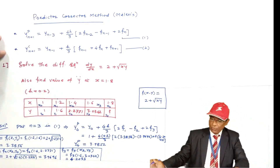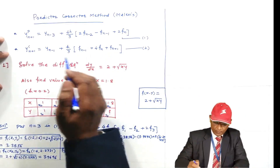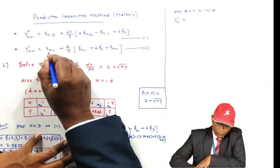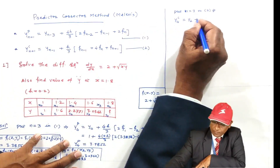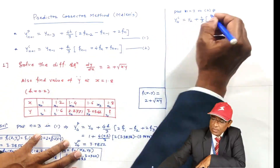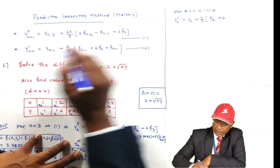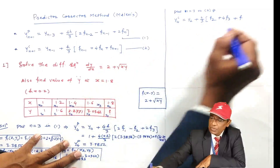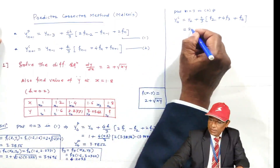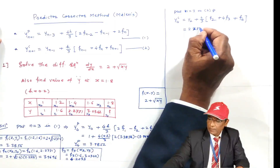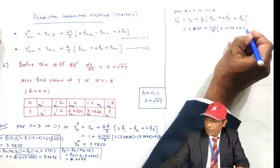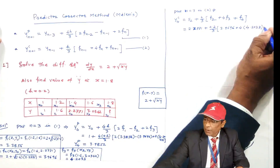Now the predicted value must be corrected using the corrector formula. Put N = 3 in equation 2: YC4 = Y2 + (h/3)[F2 + 4F3 + F4]. Y2 = 2.271, h = 0.2, F2 = 3.9696, F3 = 4.2033. F4 is needed, which uses the predicted value of Y4.